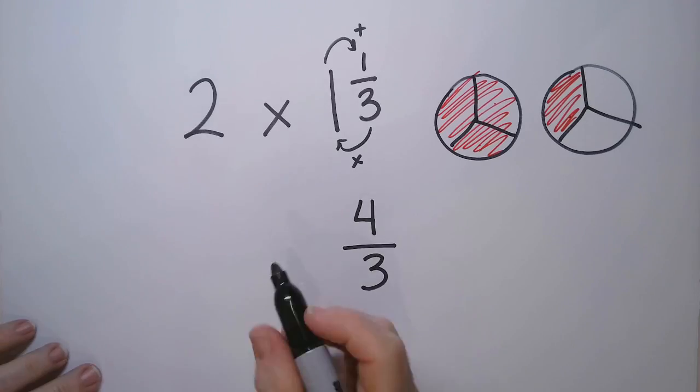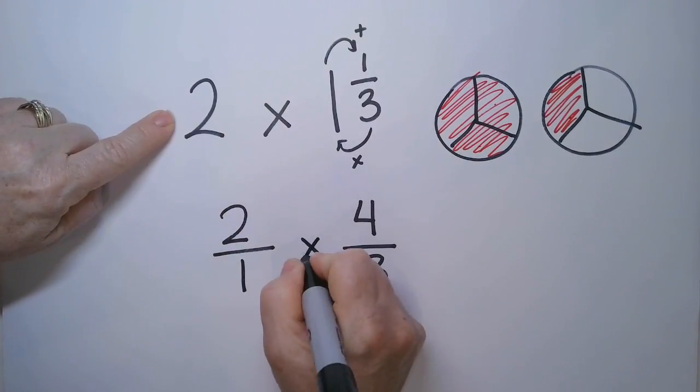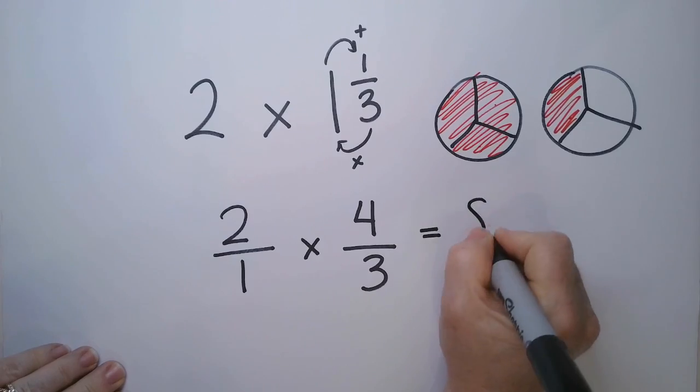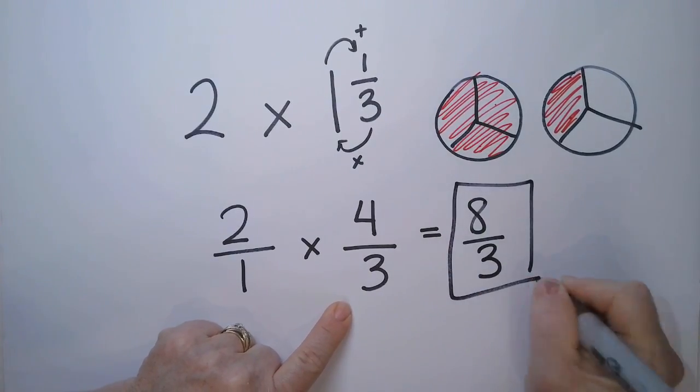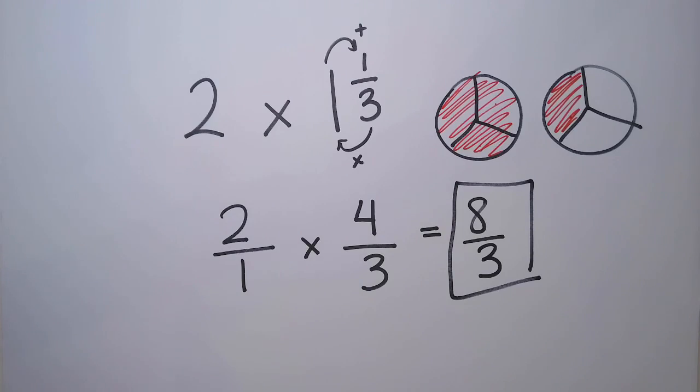All right. So now we're going to multiply by 2 over 1. 2 times 4 is 8. 1 times 3 is 3.